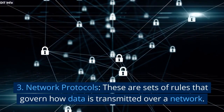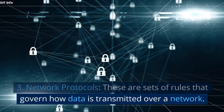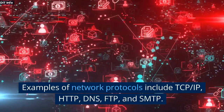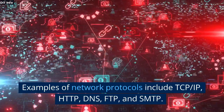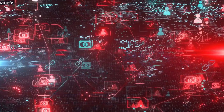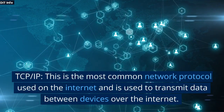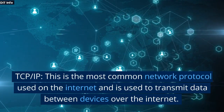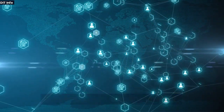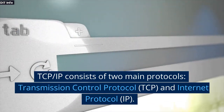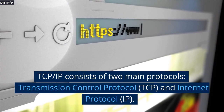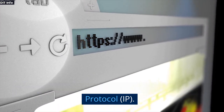Network protocols are sets of rules that govern how data is transmitted over a network. Examples of network protocols include TCP/IP, HTTP, DNS, FTP, and SMTP. TCP/IP is the most common network protocol used on the internet and is used to transmit data between devices. TCP/IP consists of two main protocols: Transmission Control Protocol (TCP) and Internet Protocol (IP).